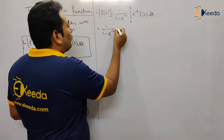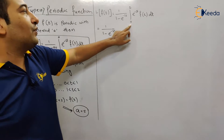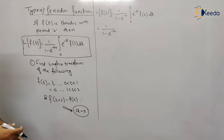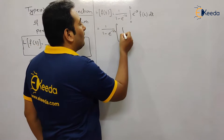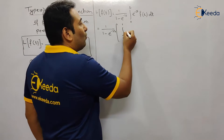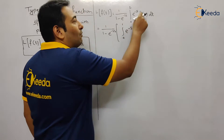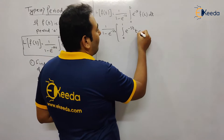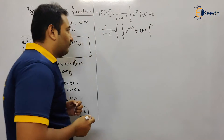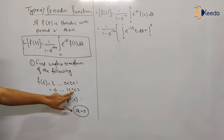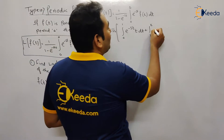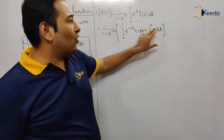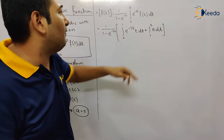We have 1 upon (1 minus e^(−2s)) times the integral from 0 to 2. The interval 0 to 2 is divided into two parts: 0 to 1, and 1 to 2. From 0 to 1, the value of f(t) is t, so we integrate e^(−st) · t. From 1 to 2, the value of f(t) is 0, so that integral vanishes.